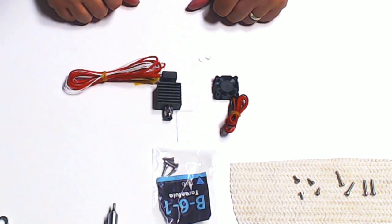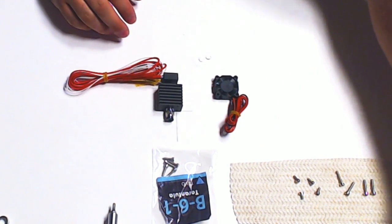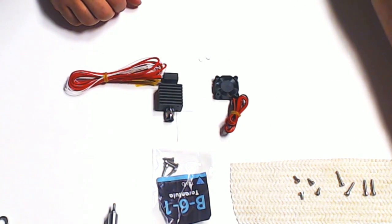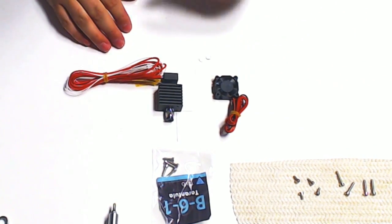All right, so here we are on B61. This is our hot end, which we will be attaching to our X carriage here momentarily. First, I want to talk about this a little bit.